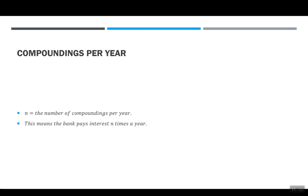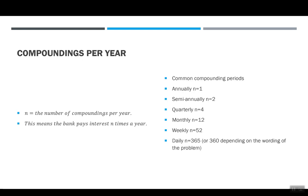Let's talk a little bit more about compoundings per year. N is the number of compoundings per year. This means the bank pays interest N times a year. Some common compounding periods: annually would be one time a year, semiannually be twice a year, quarterly will be four times a year, monthly will be 12 times a year, weekly is 52 times a year. Daily is either 365 or 360. You really have to watch the wording of the problem. When I want it to be 360, when the homework wants it to be 360, it will tell you. Otherwise, use 365.